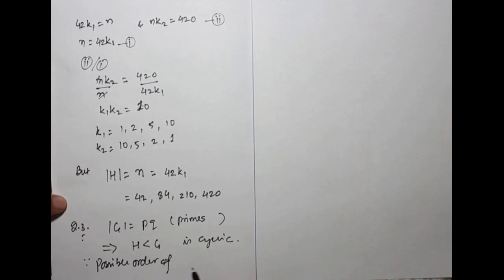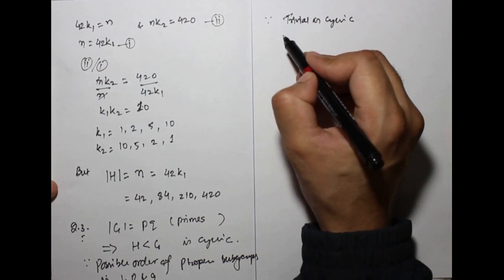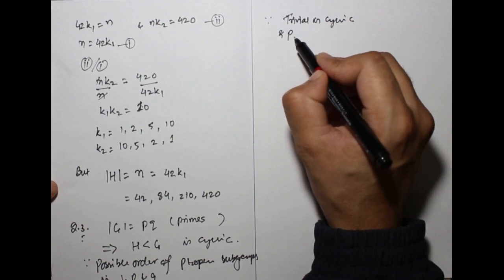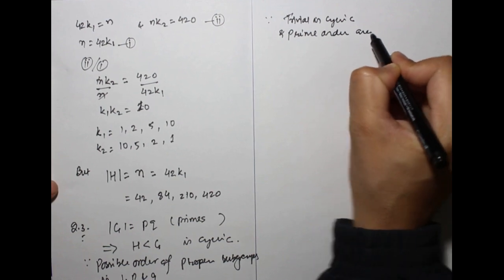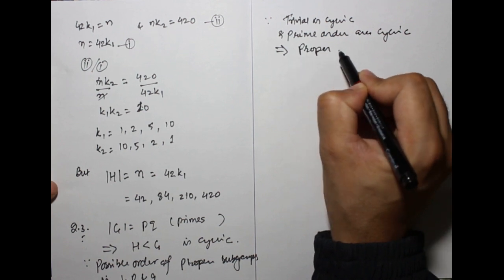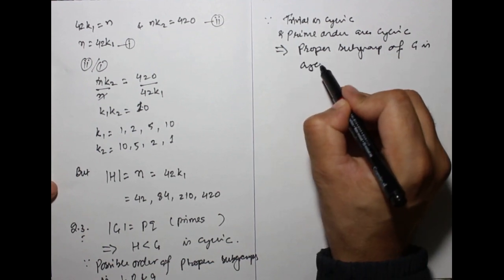Possible order of proper subgroups are 1, p, and q. Trivial is cyclic, and prime order subgroups are cyclic. It implies proper subgroups of G are cyclic.